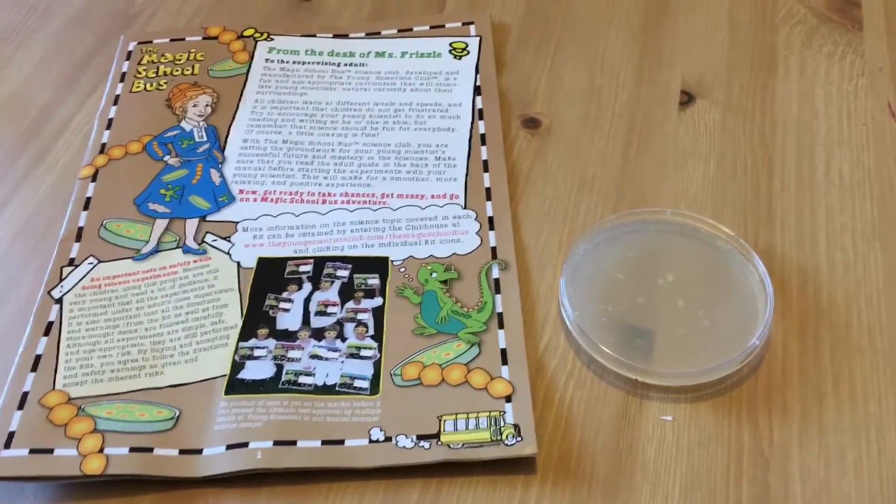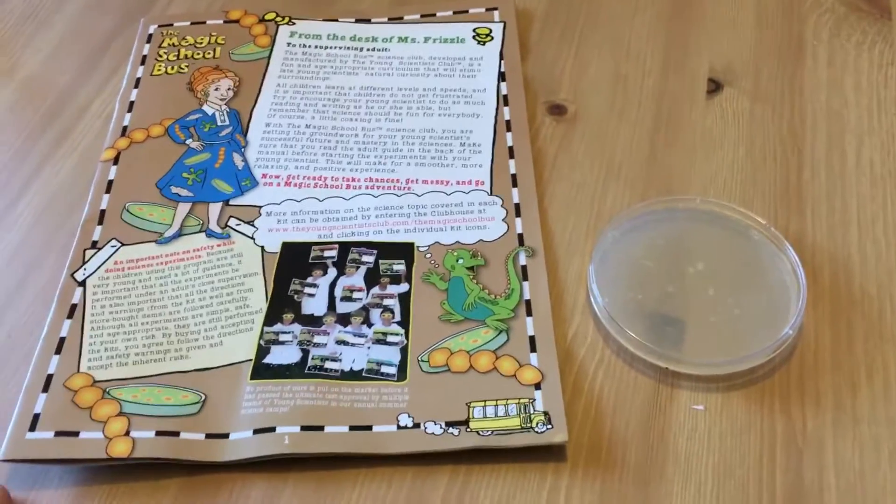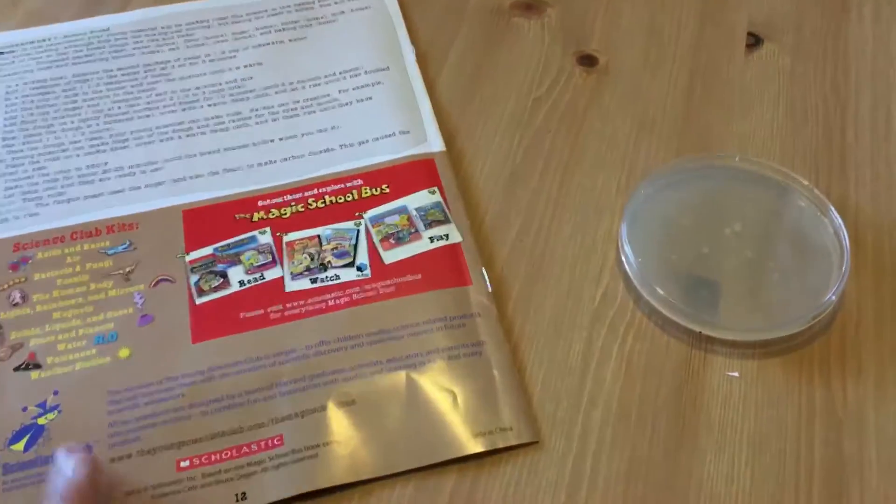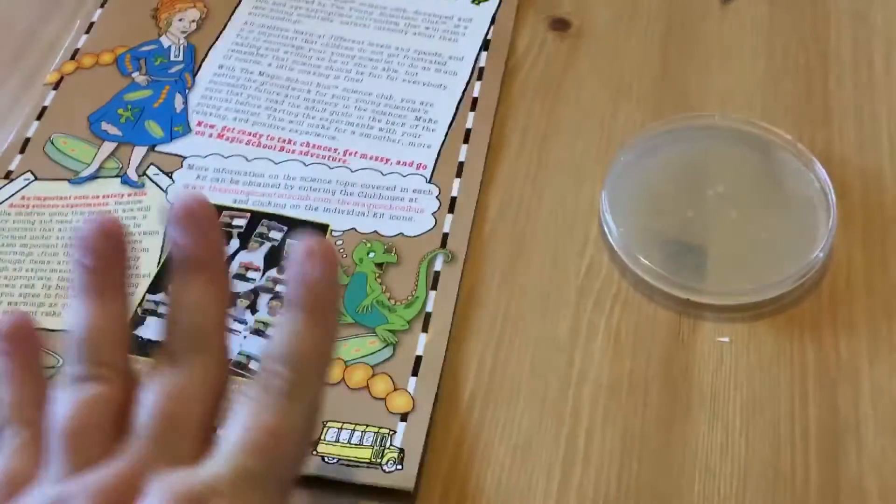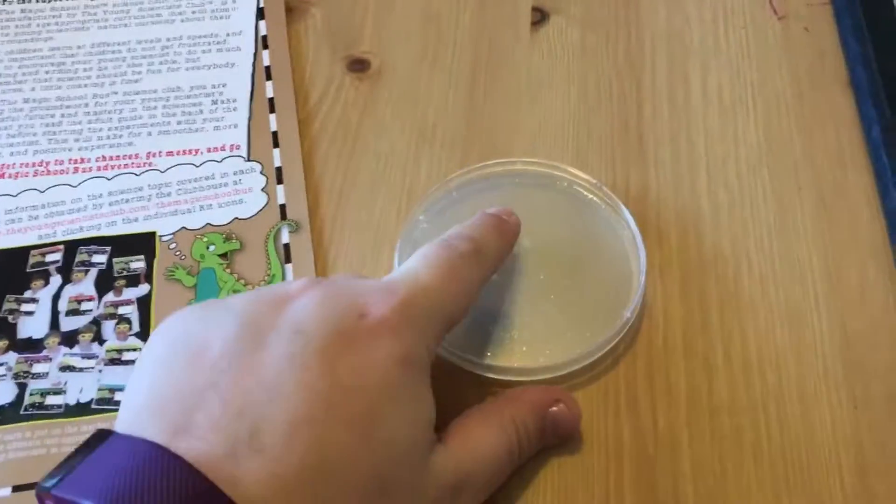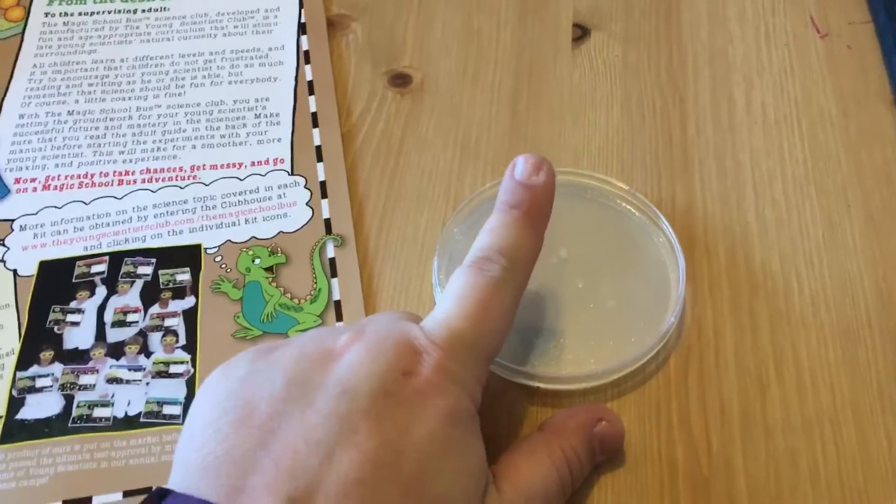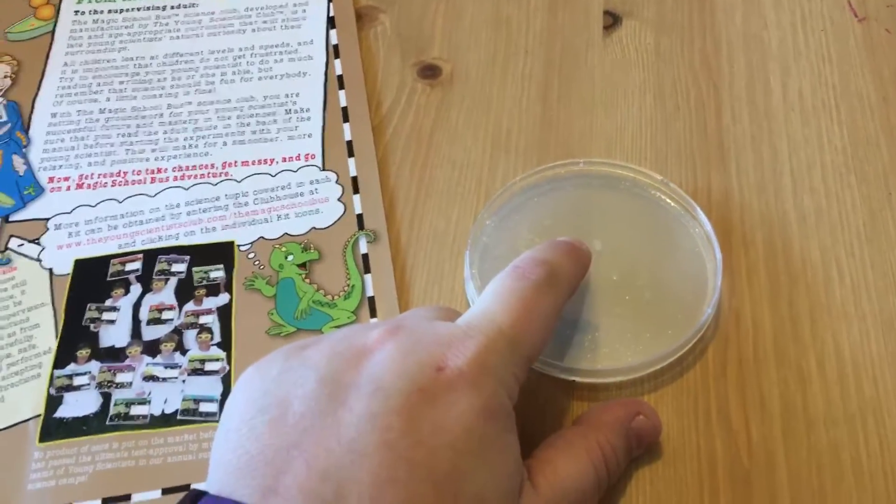All right, so for today, which is day two of our Magic School Bus Young Scientists Club bacteria and fungus kit. Yesterday we made the agar, prepared the agar and put it in the petri dishes, which that video is already up.